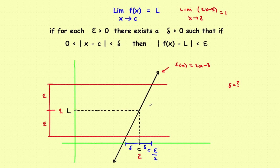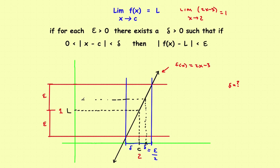With delta equal to half of epsilon, drawing vertical lines from those delta points up to the function gives us all four sides of the box. If you pick any value of x within delta of c, go up and calculate f of x, that f of x value — meaning |f(x) − L| — will be less than epsilon. In other words, if the x value is within the sides of the box, the y value will be within the top and bottom of the box, showing the limit exists.